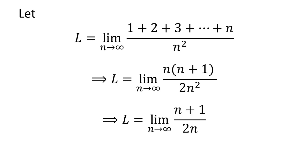Cancelling out the common factor n in the numerator and the denominator gives us L is equal to limit of n plus 1 upon 2 times n as n approaches infinity.